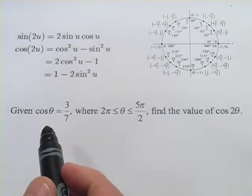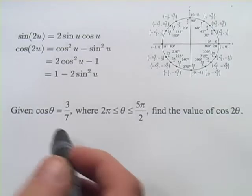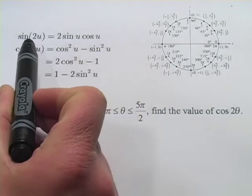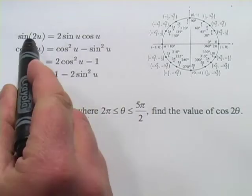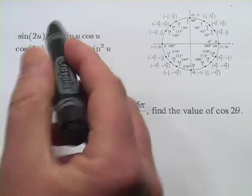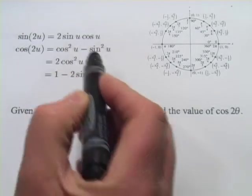In these problems we're doing some work with the double angle formulas. There's one formula for double the angle of a sine. The sine of 2u in this case would be 2 times the sine u cosine u.